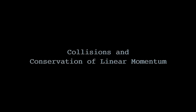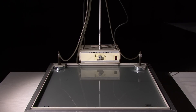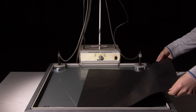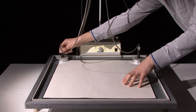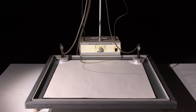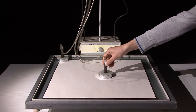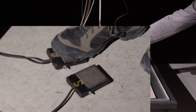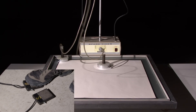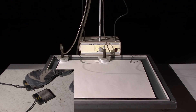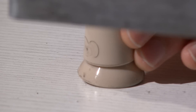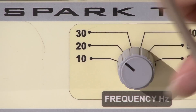4th experiment: collisions and conservation of linear momentum, part 1 - elastic collision. First, place the carbon paper and the data sheet. Before beginning the experiment, you need to check whether the air table is inclined or not. For this purpose, place one of the pucks in the middle of the paper and press on the p-switch. Set the air table parallel to the ground using its supports.